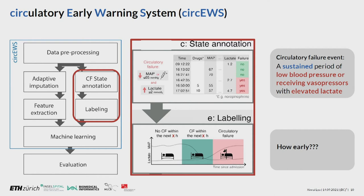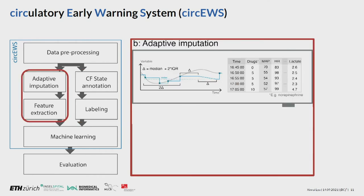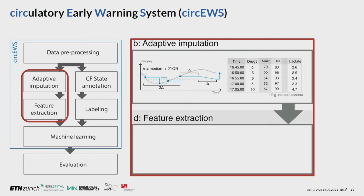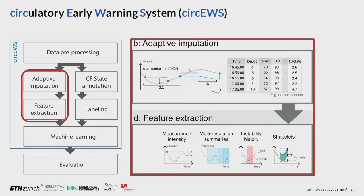Based on the experience of the clinicians, we chose X to be 8 hours, which is also how long a shift lasts in the ICU. To extract features, we project all time series onto a five-minute time grid and impute values at time points where actual measurements are missing using adaptive imputation. We then extract four types of features from the dynamic variables: shapelets, which are time series motifs; instability history; multi-resolution summaries; and measurement intensity. Besides those features, we also have static information about the patient such as age, height, and gender.